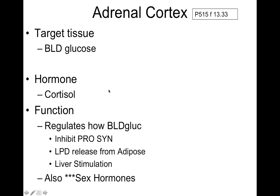The adrenal cortex targets blood glucose, with the hormone cortisol. The hypothalamus releases corticotropin-releasing hormone, which goes to the anterior pituitary, which releases adrenal corticotropic hormone. The adrenal cortex then releases cortisol, which regulates blood glucose by stimulating the liver for glycogen, lipid release from adipose tissue, and also inhibits protein synthesis.